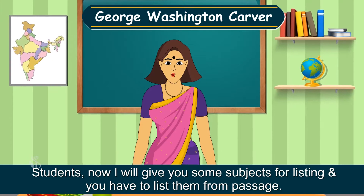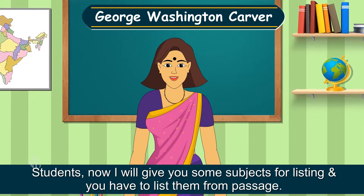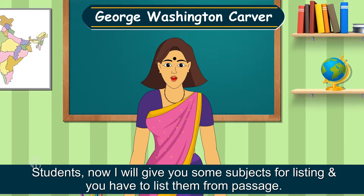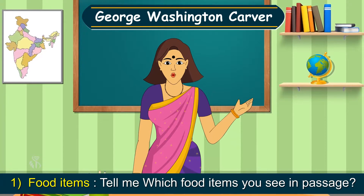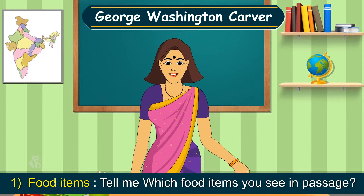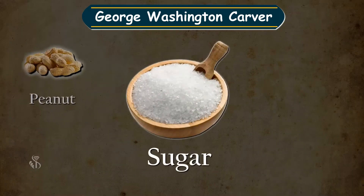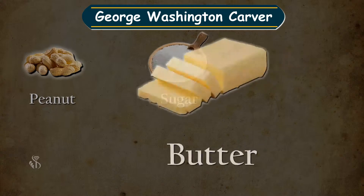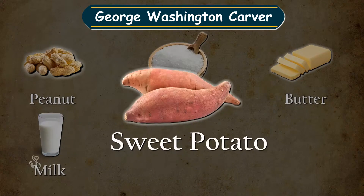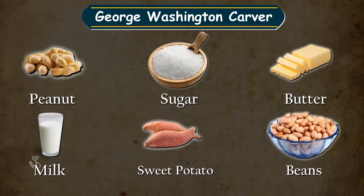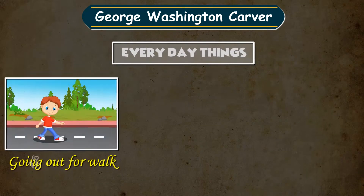Students, I will give you some subjects for listing and you have to list them from the passage. Tell me which food items you see in the passage: peanut, sugar, butter, milk, sweet potatoes, beans — everyday things going out.